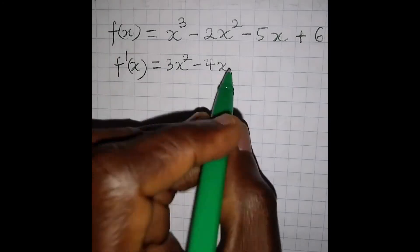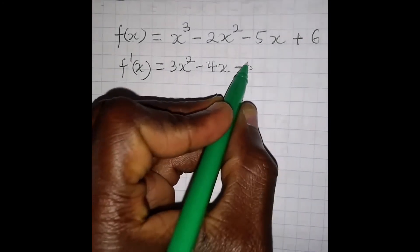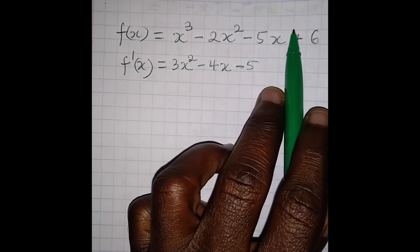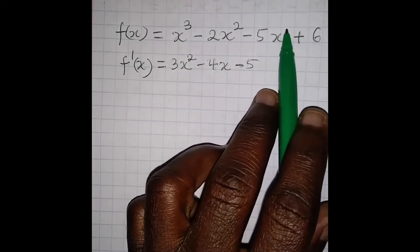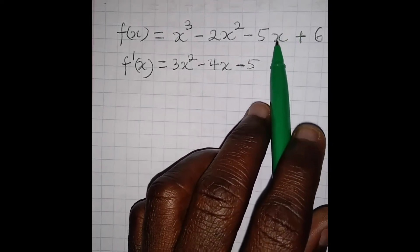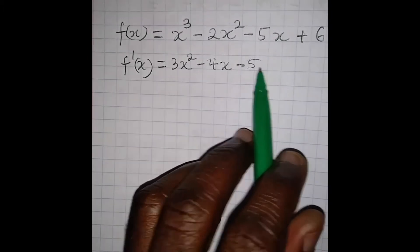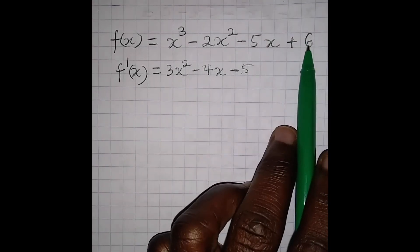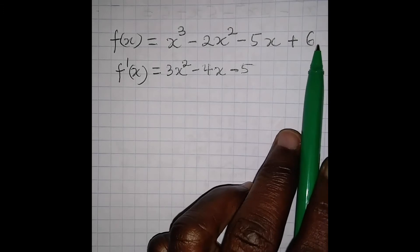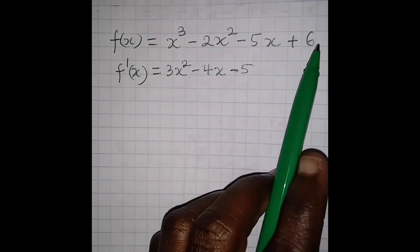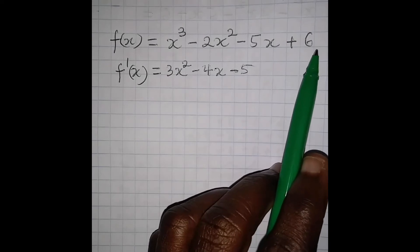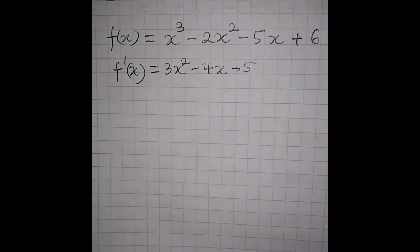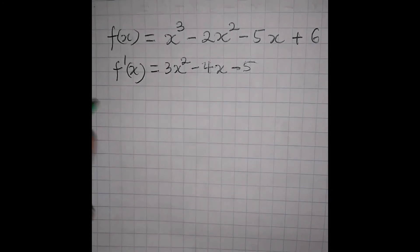Here, 1 is the power times minus 5, giving us minus 5, and we have x to the power of 1. The original power 1 minus 1 gives us 0, so x to the power of 0 equals 1, meaning 1 times minus 5 gives us minus 5. This is a constant — it has no variable attached to it — and the derivative of a constant is 0, so the derivative of 6 is 0. This is the first derivative of the function.